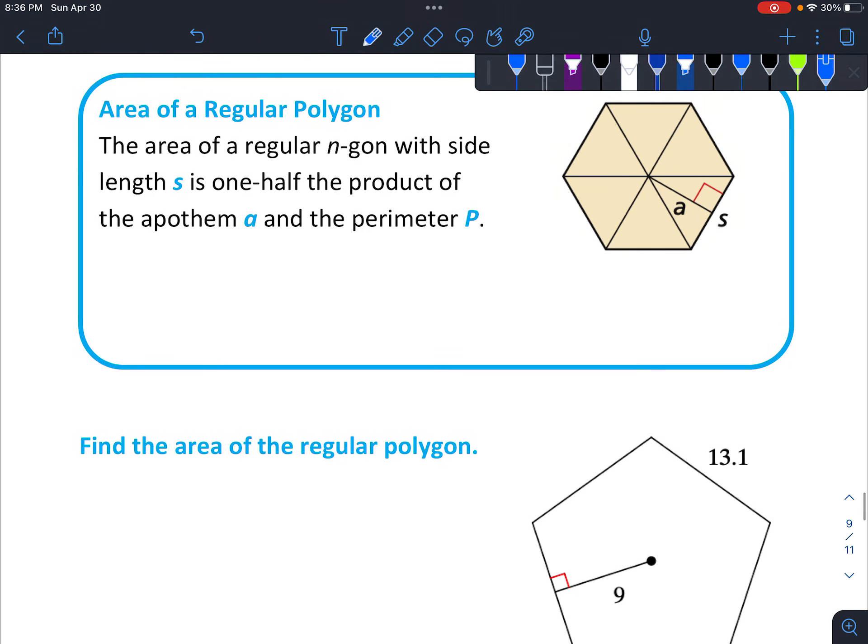Okay. So the area of a regular polygon, we're going to say A equals one-half A times perimeter. So apothem times perimeter. Or A equals one-half times A and S. Apothem times the number of sides times the length of each side.